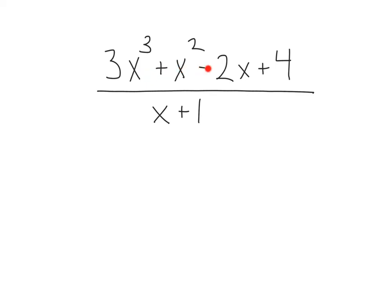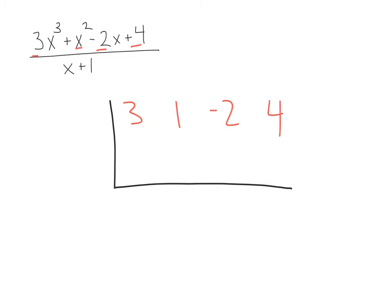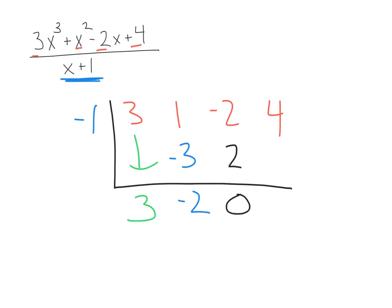Next example: three x cubed plus x squared minus two x plus four divided by x plus one. We're going to start with our chart and move on to our coefficients: three, one, negative two, four. Then we've got x plus one, where we use the opposite, so minus one. Bring down three; negative one times three is negative three; one plus negative three is negative two; negative one times negative two is positive two; negative two plus two is zero; negative one times zero is zero; four plus zero is four.